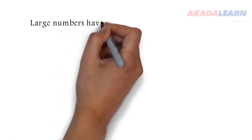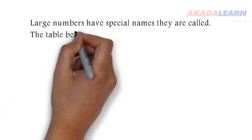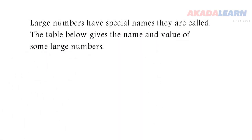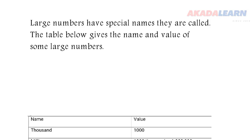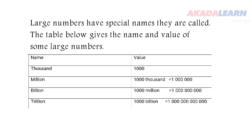Large numbers have special names. The table below gives the name and value of some large numbers. Examine the table properly to see how many zeros those large numbers have.